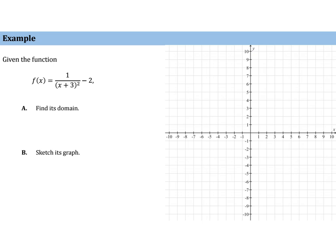Whenever we think about this function, we know that this will be a shift left 3 units and then down 2. So the domain, instead of just excluding 0,